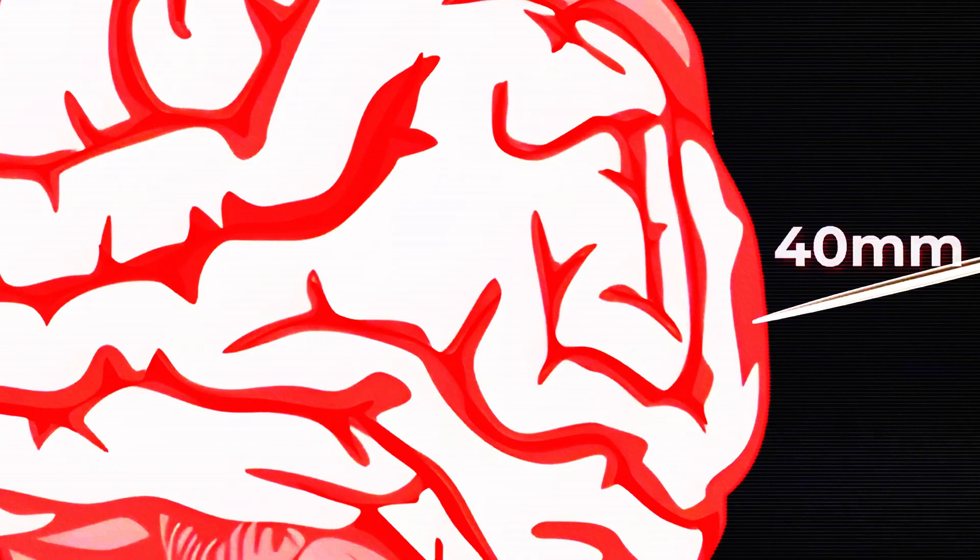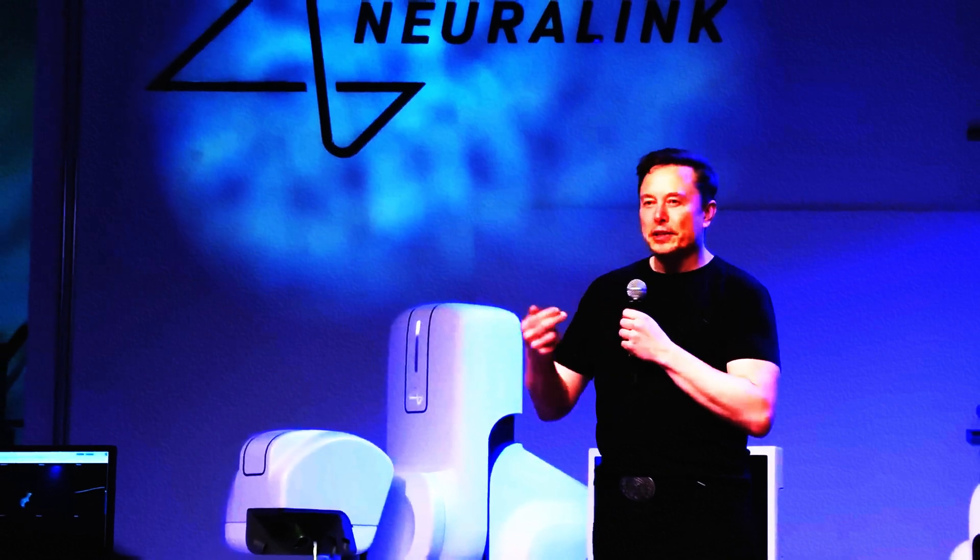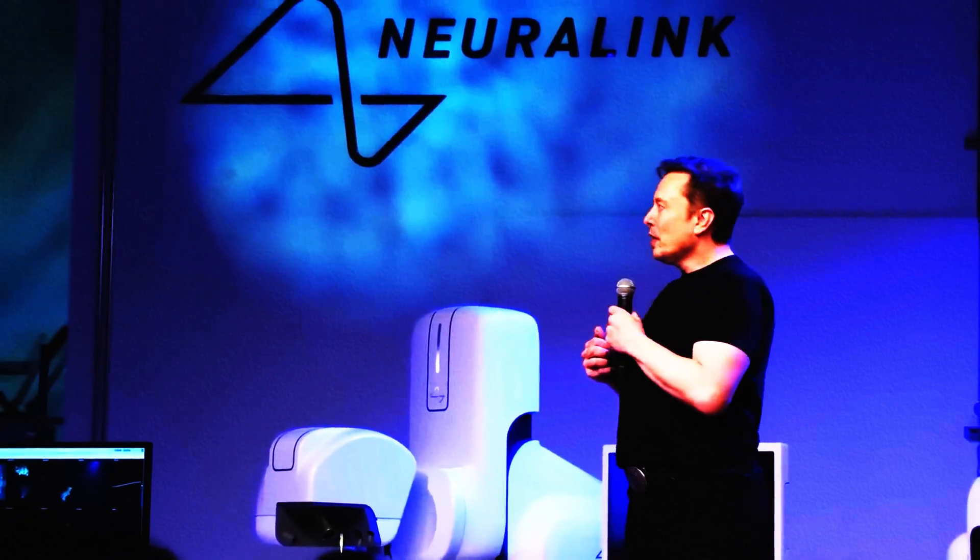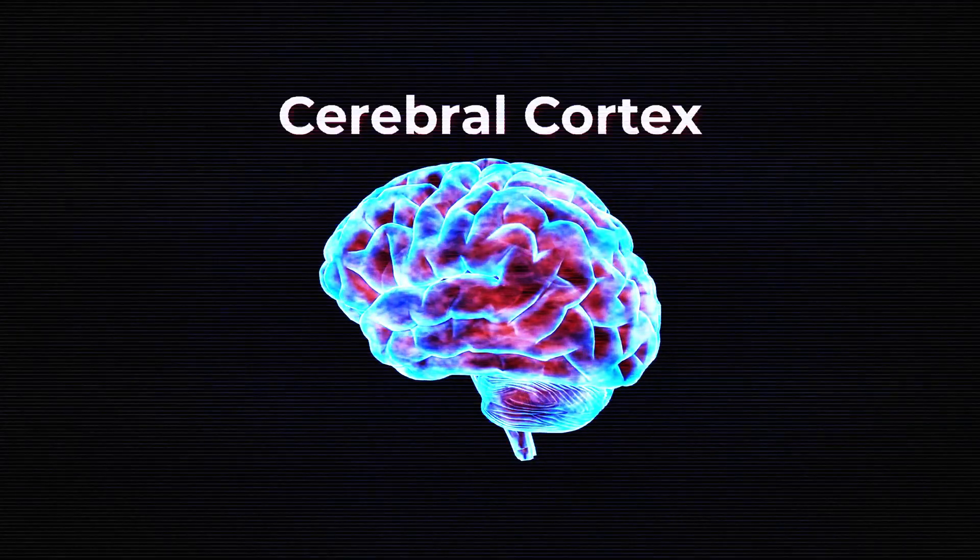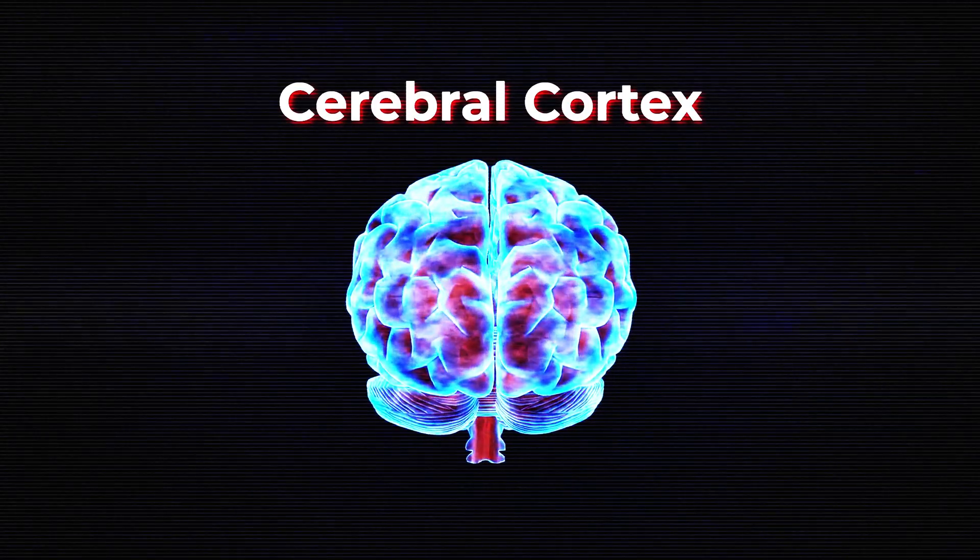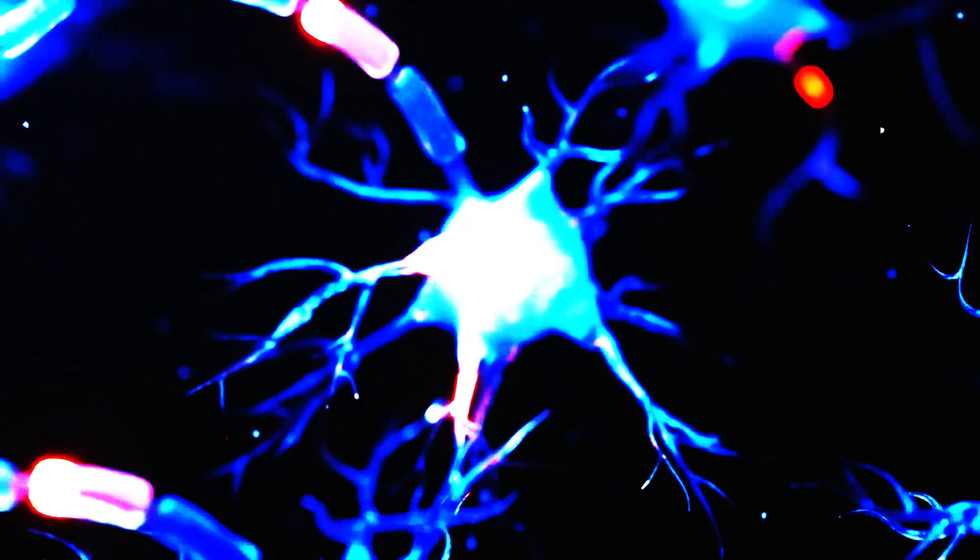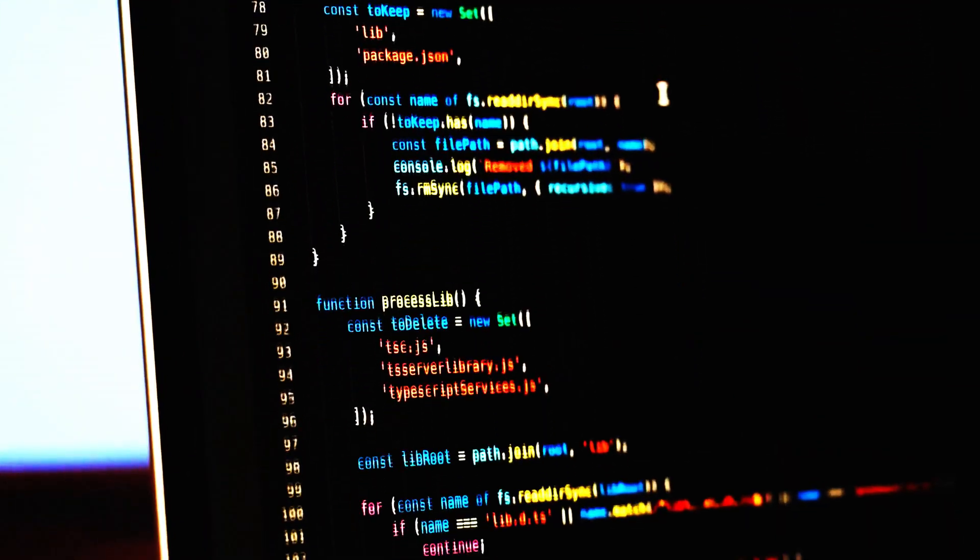Now, this obviously raises questions. Like, will the brain be able to understand this new input? Can you learn to see? According to neuroscientists, maybe. There's precedent. Studies with sensory substitution devices, like tongue displays that translate camera input into electric pulses, have shown that the brain can adapt to visual input coming from bizarre places. And with machine learning, Blindsight could eventually tailor visual data to each person's unique brain patterns. The chip doesn't just beam a signal, it learns how your neurons respond and adjusts in real time. This isn't sci-fi anymore, it's neuroplasticity, supercharged.